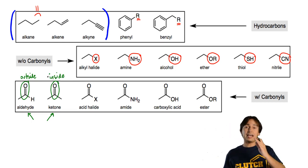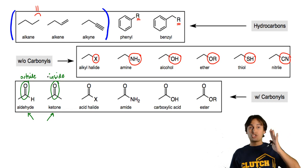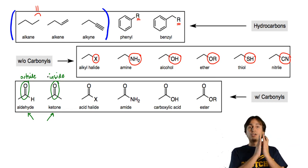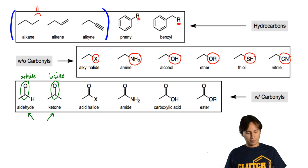If it's on the outside — meaning it's on the terminal end with a hydrogen coming off of it — that's an aldehyde. If it's within a carbon chain and there's carbons on both sides, that's a ketone.